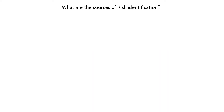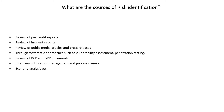What are the sources of risk identification? A risk practitioner can identify risk through various available sources such as reviewing past audit reports, incident reports, public media articles, press releases, through systematic approaches like VA, PT, BCP, and DLP documents. They can also interact with senior management and process owners to understand current threats and vulnerabilities, and by conducting various scenario analyses. Please note, these are an illustrative list and there can be many more ways to identify risk.